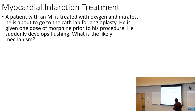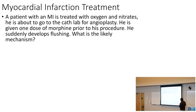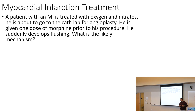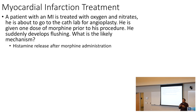A patient with an MI is treated with oxygen and nitrates, about to go to the cath lab for angioplasty. He is given one dose of morphine prior to his procedure and suddenly develops flushing. Morphine is going to cause a little bit of histamine release, and that histamine release is going to cause itching. That's a really important point — we see this a lot in pediatrics as well.